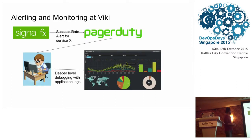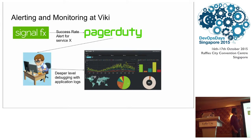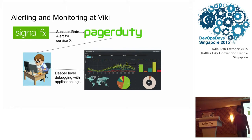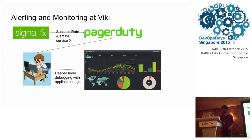We use a service called SignalFX as our store for time series data of key-value metrics. When it triggers an alert — say, a success rate alert for service X — it goes to PagerDuty, an engineer looks at it, and then goes into Kibana to look at what's actually happening and go through the actual requests.